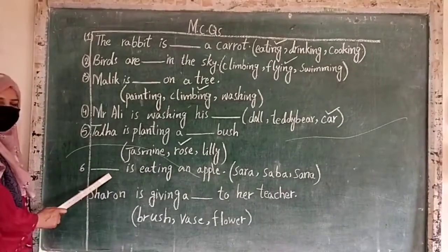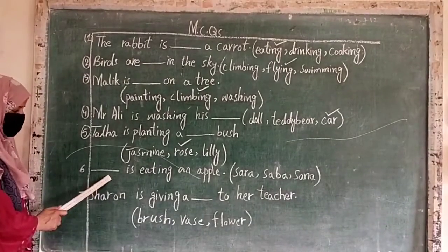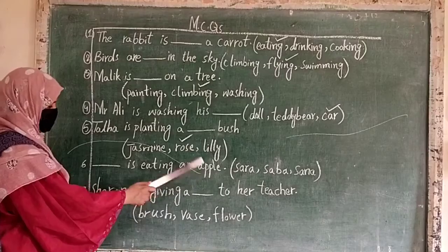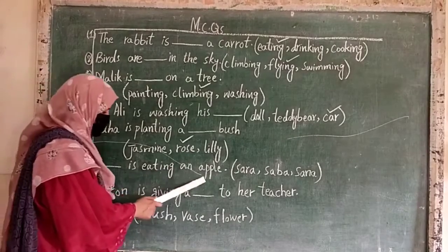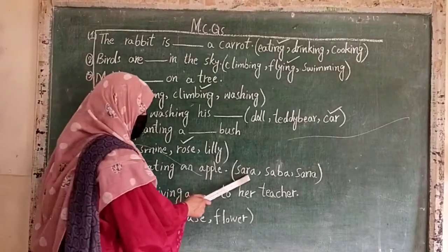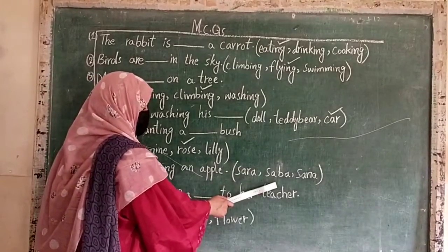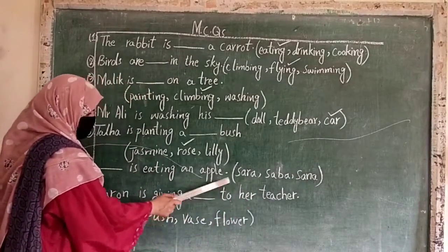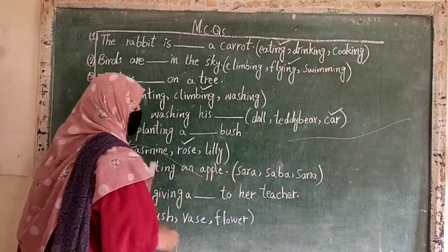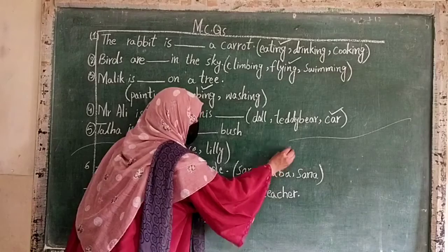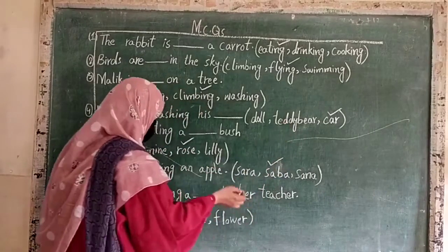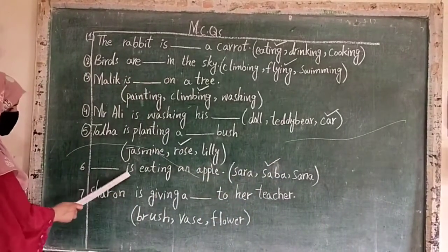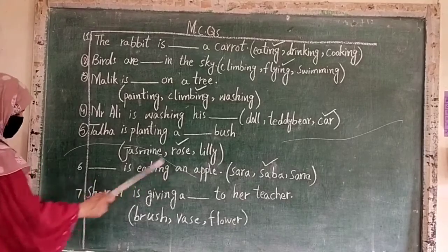Number 6: ___ is eating an apple. Who is it — Sara or Saba? The answer is Saba. Saba is eating an apple.